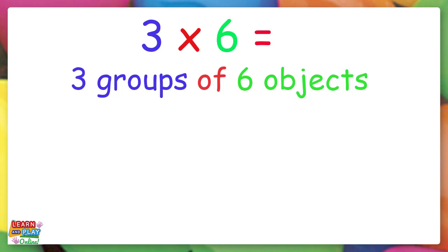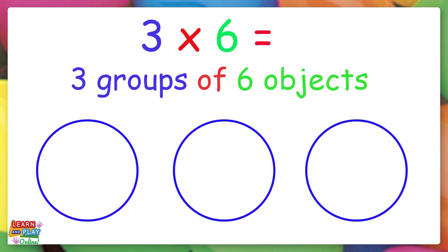Great! Let's start by making our 3 groups. 1, 2, 3. Now let's put 6 dots in each group.